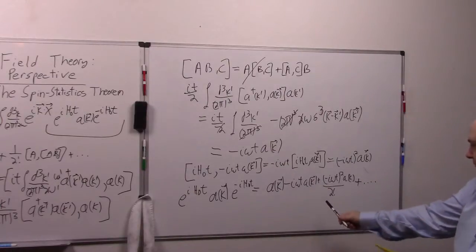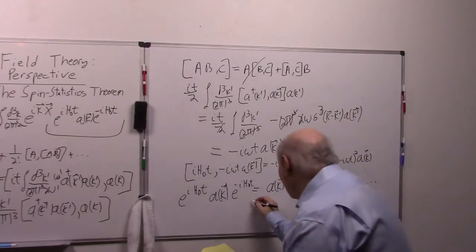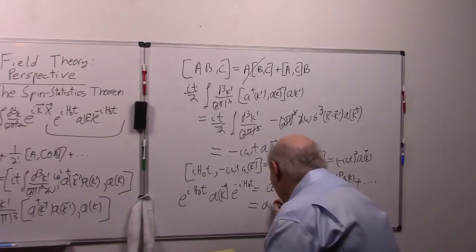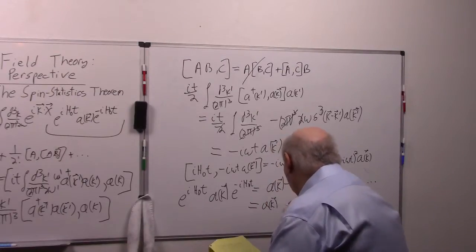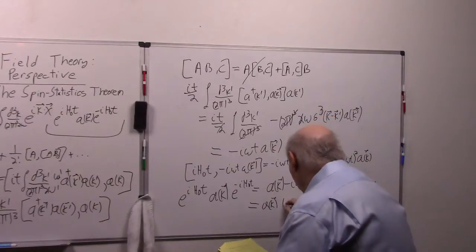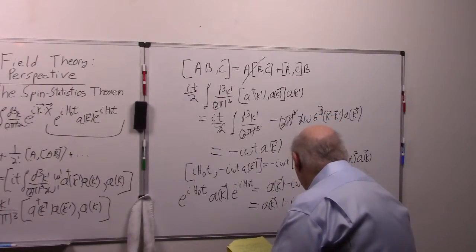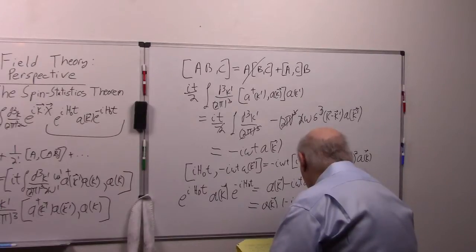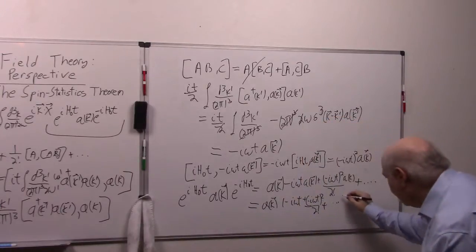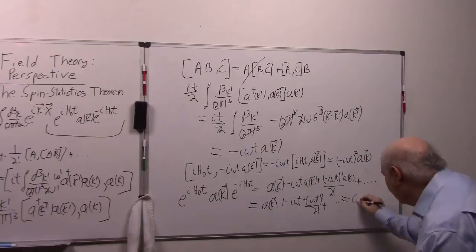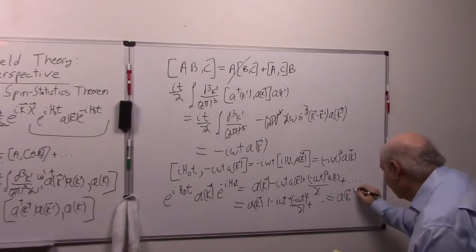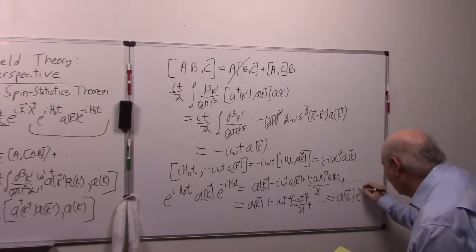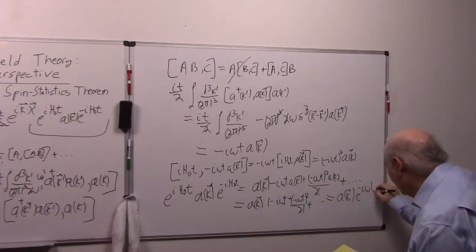So you can see here once I factor out the A. And the end result is a nice result. It's just the annihilation operator A times e^(-iωT).